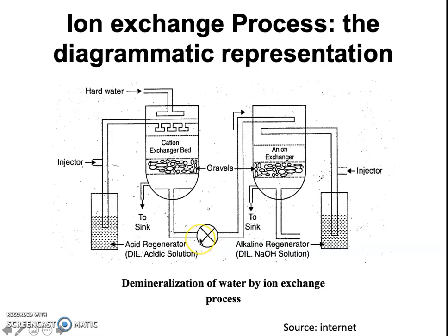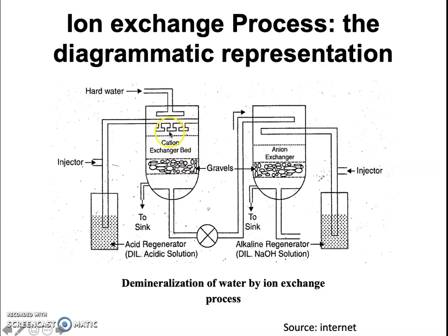Now let us see the diagrammatic representation of this process. This is how the ion exchange process is carried out. This is the cation exchange bed — you can see the gravels, the big pebbles or stones present in this cylindrical container. The purpose of these gravels is to support the cation exchange bed. This bed contains negatively charged functional groups which help to trap the cations present in hard water. When hard water is first allowed to pass through the cation exchange bed, all the cations get trapped into the resin, and the water coming out contains H⁺ ions and all the anions initially present in hard water.